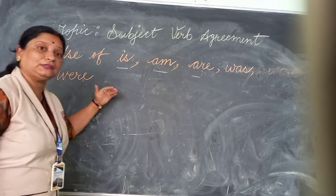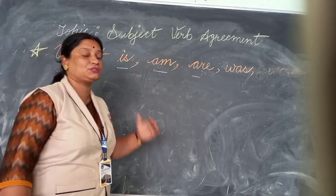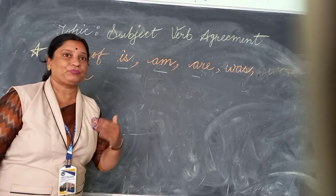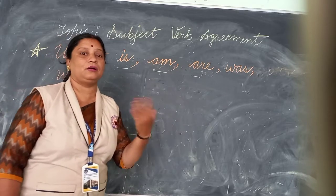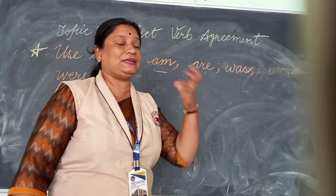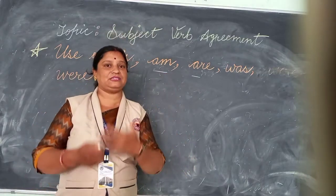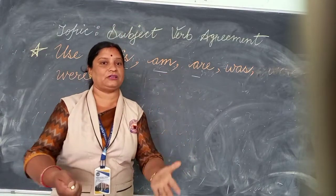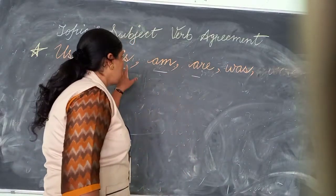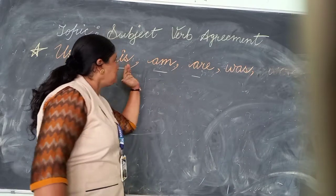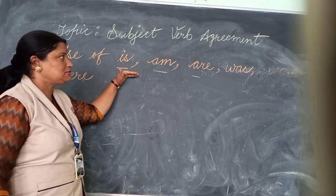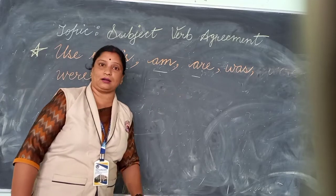Before doing this, you must know that there are three tenses: present, past, and future. Present is related with the present time — related with our today. That is our present tense. And in present tense we use the verbs is and are.